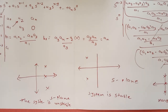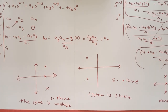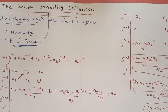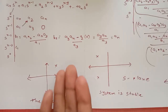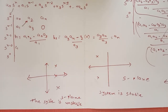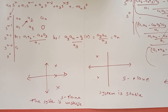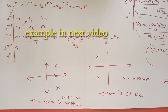One disadvantage of the Routh-Hurwitz criteria is that it cannot tell us the exact values of the roots or their precise location in the s-plane — it only indicates whether the system is stable or not. However, it is easy to apply using just the array formulation, making it useful for checking the stability of a characteristic equation. Let's now start with a basic example.